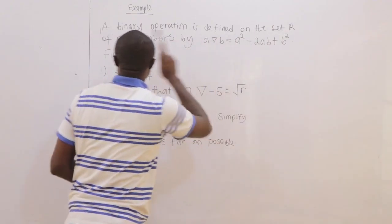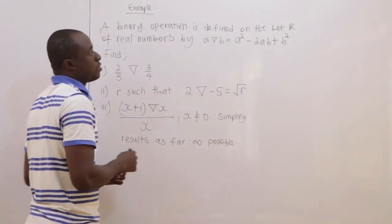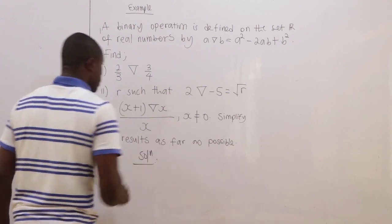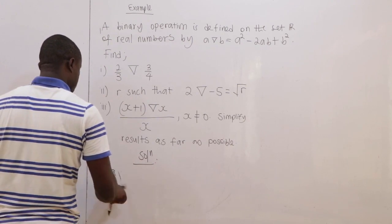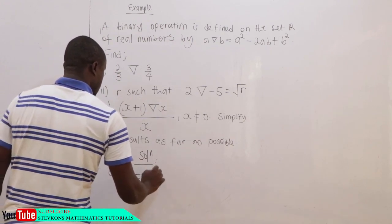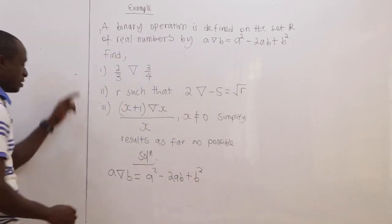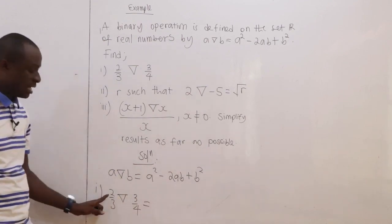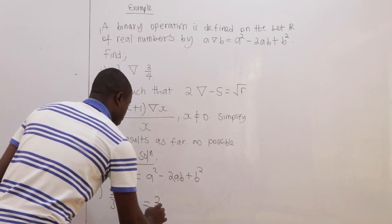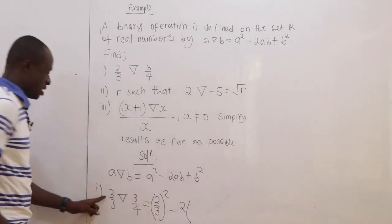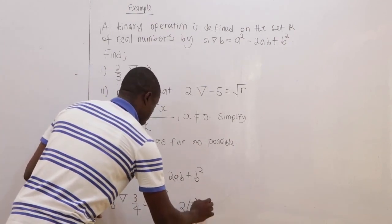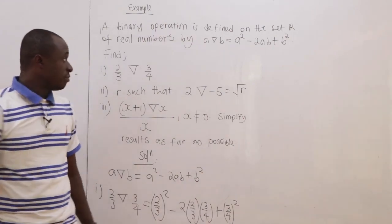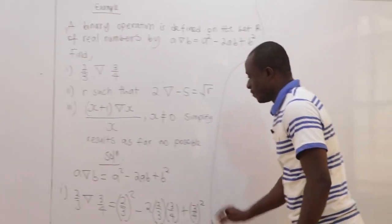A binary operation is defined on R by A⊕B = A² − 2AB + B². The first part: find (2/3) ⊕ (3/4). Put the rule down: A⊕B = A² − 2AB + B². Here A = 2/3, B = 3/4. So (2/3)² − 2(2/3)(3/4) + (3/4)².